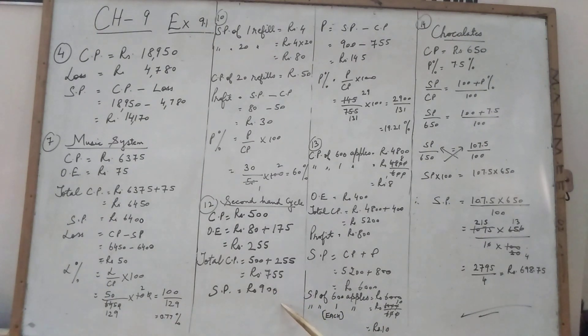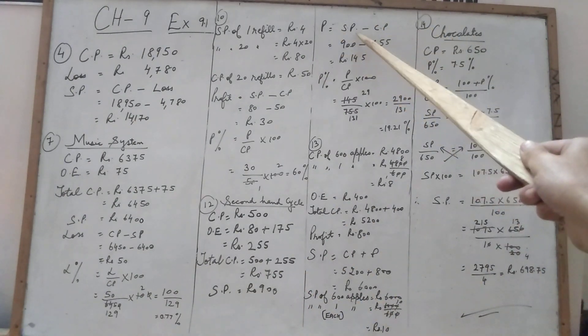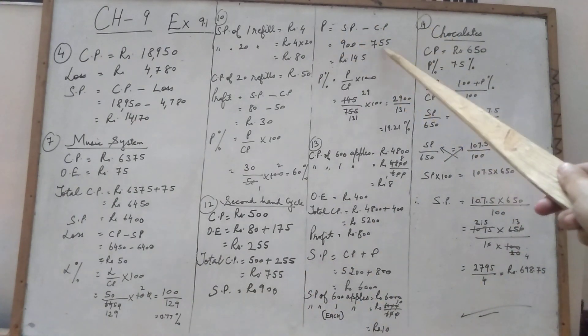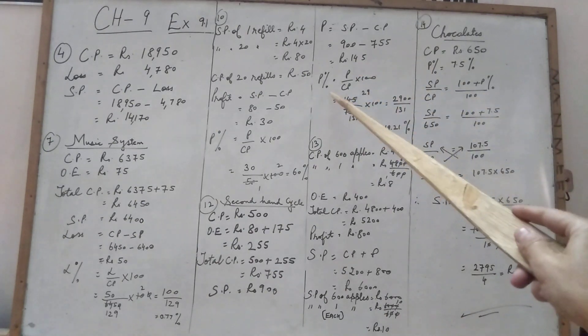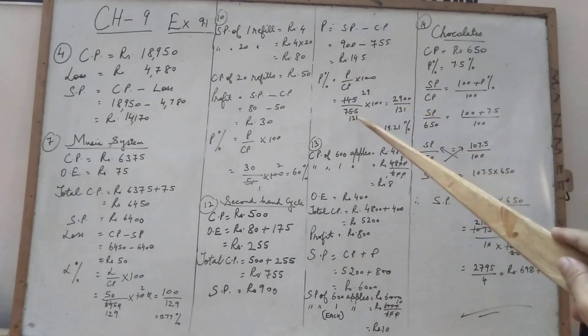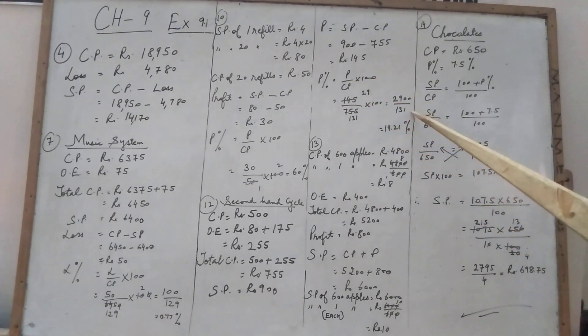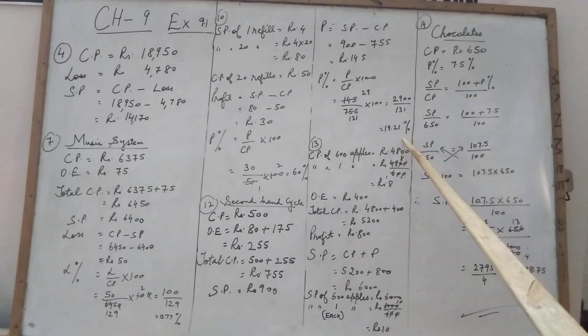Now children, we have cost price. Don't take the cost price Rs. 500. After adding the overhead expenses, every time cost price is taken, total cost price. So total cost price Rs. 755. Selling price Rs. 900. Which is greater? Selling price. So we got profit. Profit is selling price minus cost price. 900 minus Rs. 755, Rs. 145. But we have to find the percentage also. Profit over CP into 100.